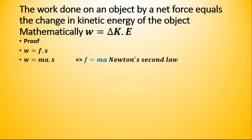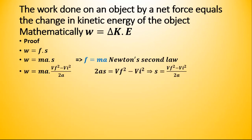Substituting, the equation becomes W is equal to ma dot s. According to the Newton equations of motion, we know that 2as is equal to vf squared minus vi squared. Dividing both sides by 2a, the distance s equals vf squared minus vi squared divided by 2a. We now put this value of s into the equation.